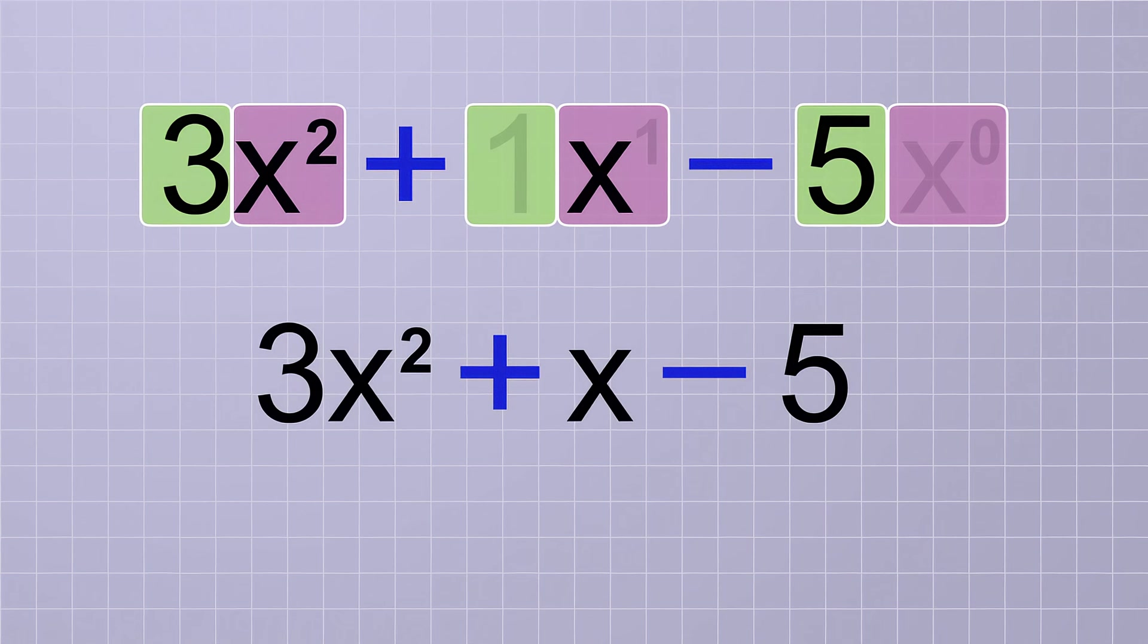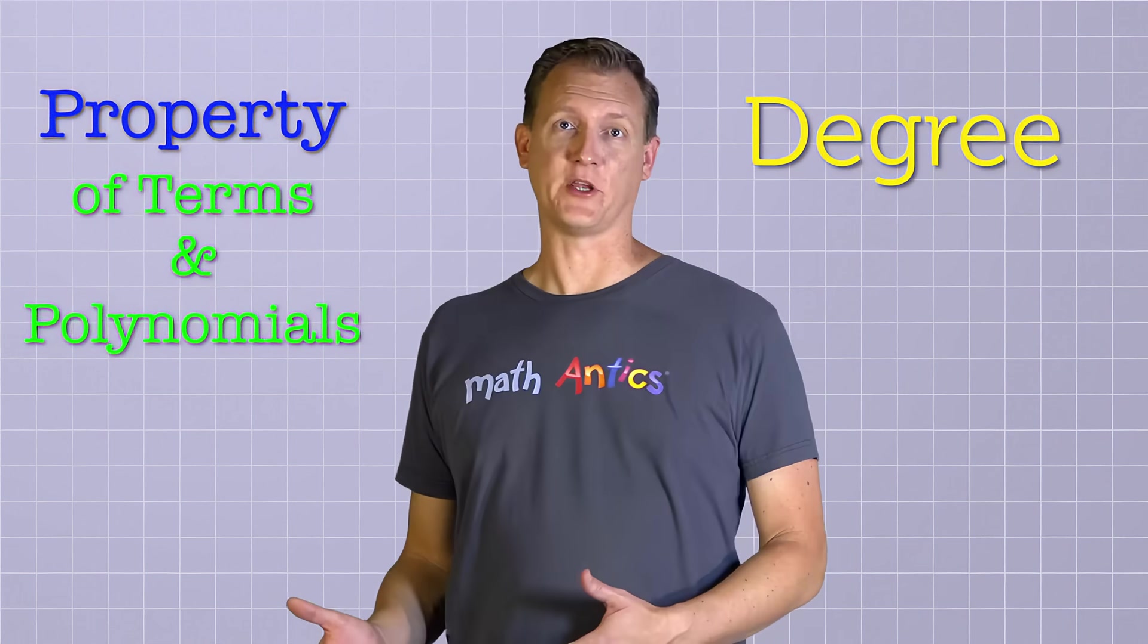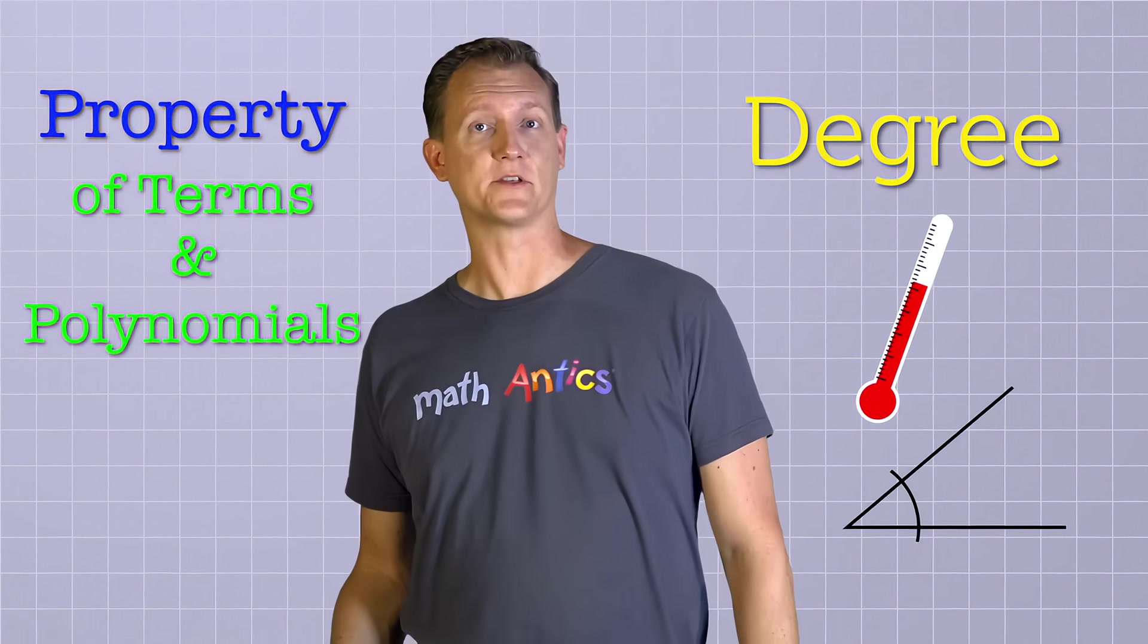Oh, and this last term, the one that doesn't have a truly variable part, it's called a constant term because its value always stays the same. Alright, now that you know what a polynomial is, let's talk about an important property of terms and polynomials called their degree. Now that might sound like the units we use to measure temperature or angles, but the degree we're talking about here is different.